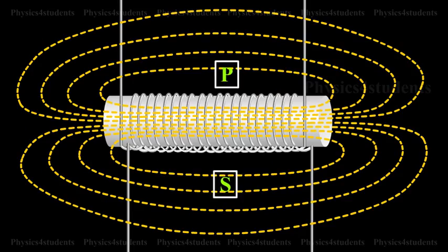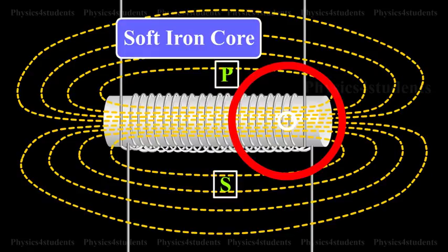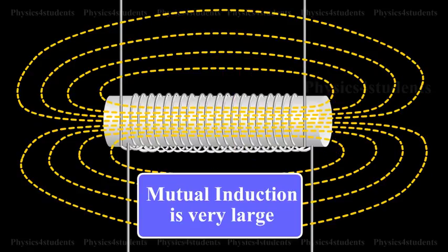If the two coils are wound on a soft iron core, the mutual induction is very large.